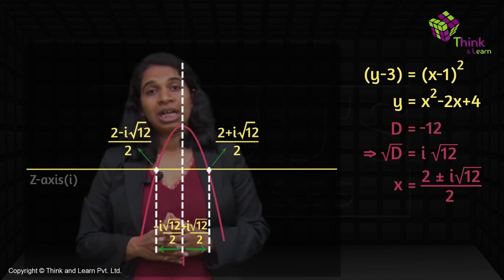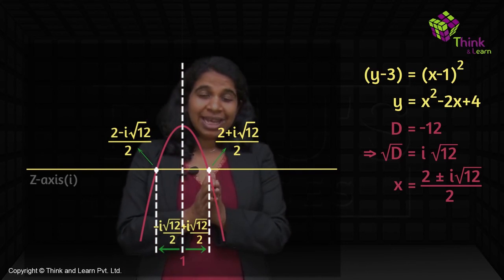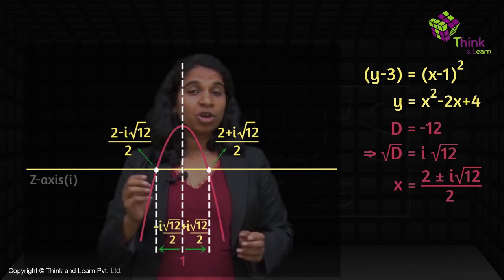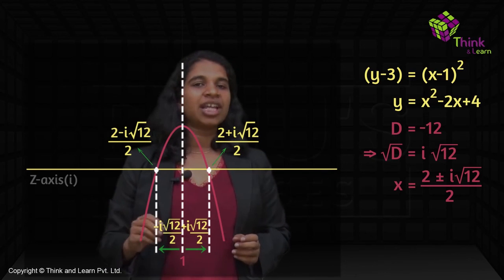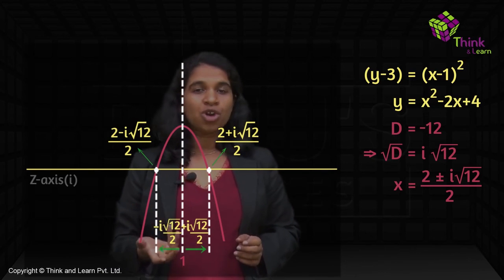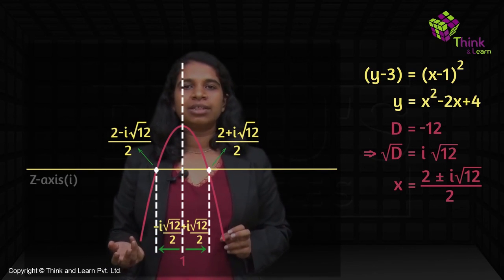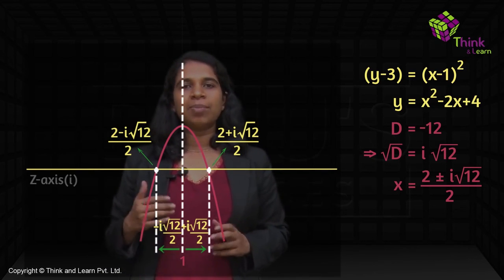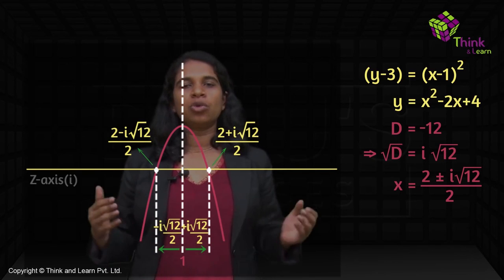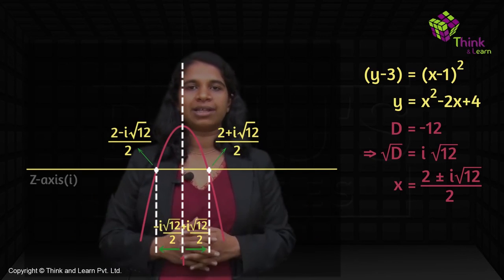So in the case of D less than 0, there are no real roots — but it's not that there are no roots at all. There are roots, but those roots are complex and they always occur in pairs.